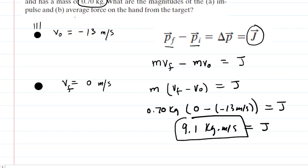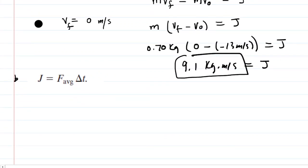In part B, we have to calculate the average force. And we can do that by using this theorem here. This tells us that the impulse is equal to the average force multiplied by the time interval. So to solve for the average force, we would divide both sides of this equation by that time interval. We can see that the impulse magnitude divided by the time interval is equal to the magnitude of the average force.